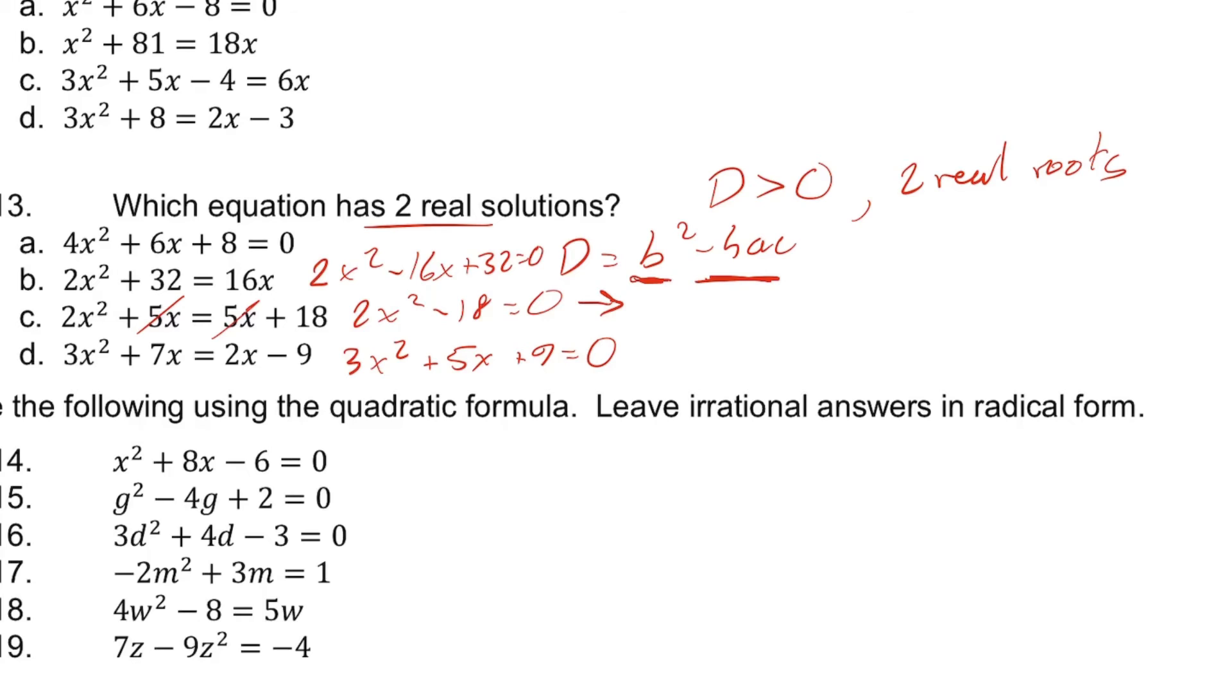We know the discriminant for c is going to be b squared, which is zero squared, minus 4 times a, which is 2, times c, which is negative 18, which turns out to be a positive number. And that positive number is 144.